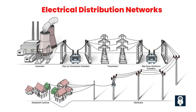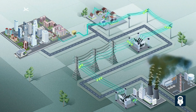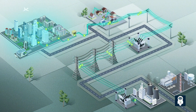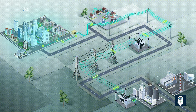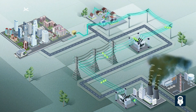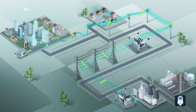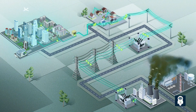An electrical distribution network is a complex system of power lines, transformers, switches, and other equipment that carries electricity from the transmission system to homes, businesses, and other end users. It consists of distribution substations, which step down the voltage to a usable level, and a network of overhead or underground lines that deliver power to individual customers.